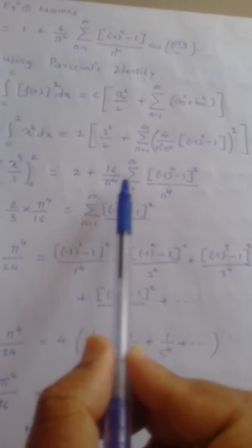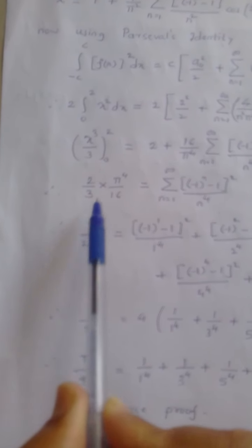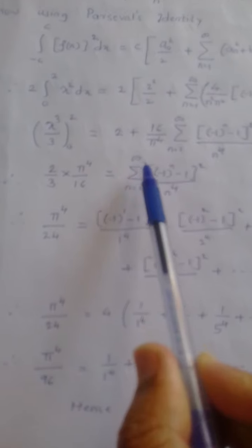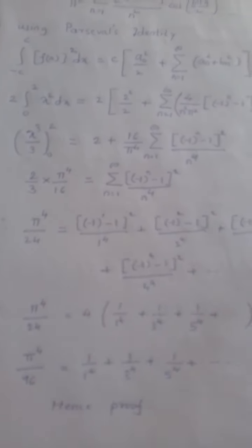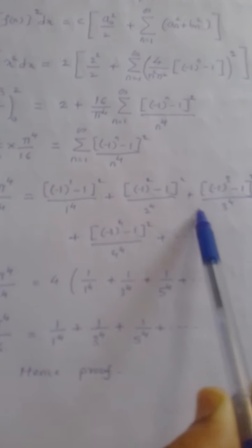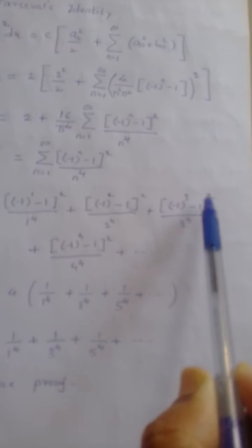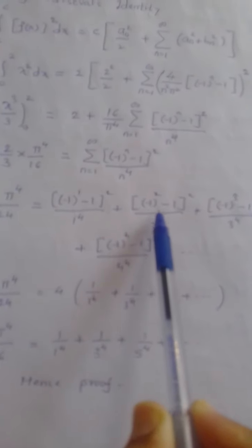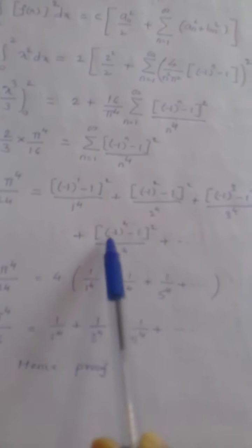Since 16 and π⁴ are constant terms they are taken outside the summation. After simplification, (2/3) × π⁴/16 = summation n from 1 to infinity of (−1)^(n−1)² / n⁴, giving π⁴/24 on the left. Substituting n = 1, 2, 3, 4... into the summation: when n is even, (−1)^(n−1) squared gives 0 contribution in the alternating sense; the series exists only for odd values of n. Therefore π⁴/24 = 4 × (1/1⁴ + 1/3⁴ + 1/5⁴ + ...).